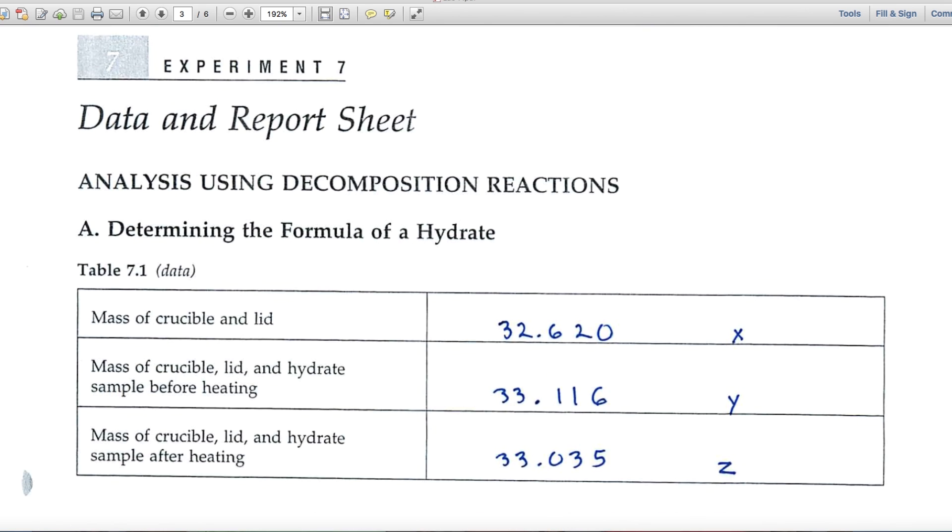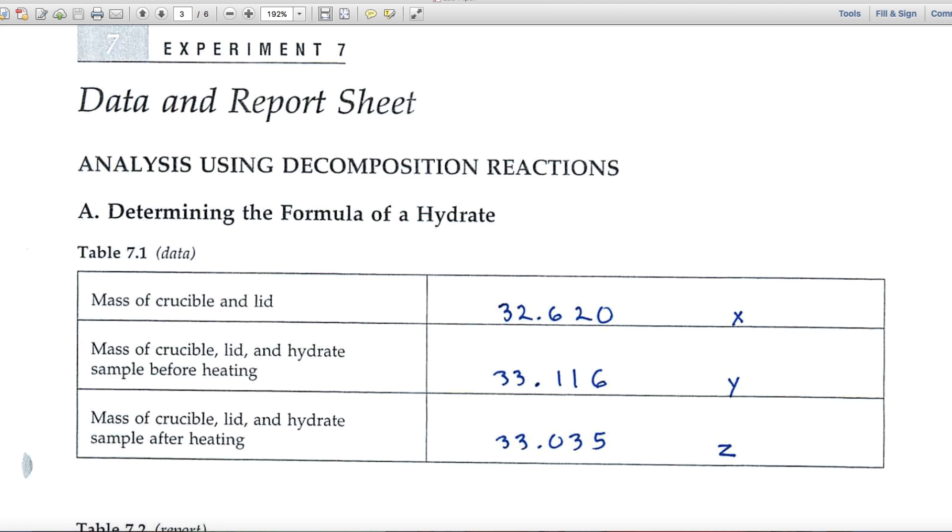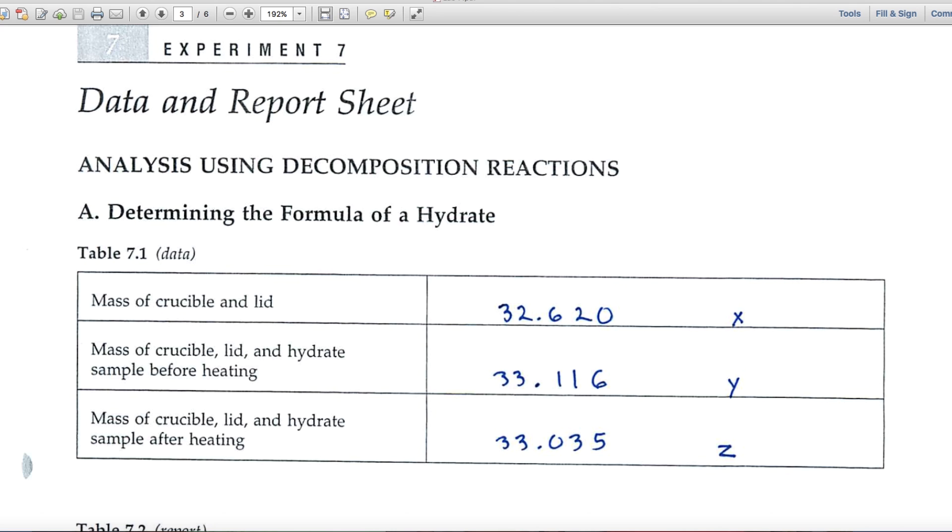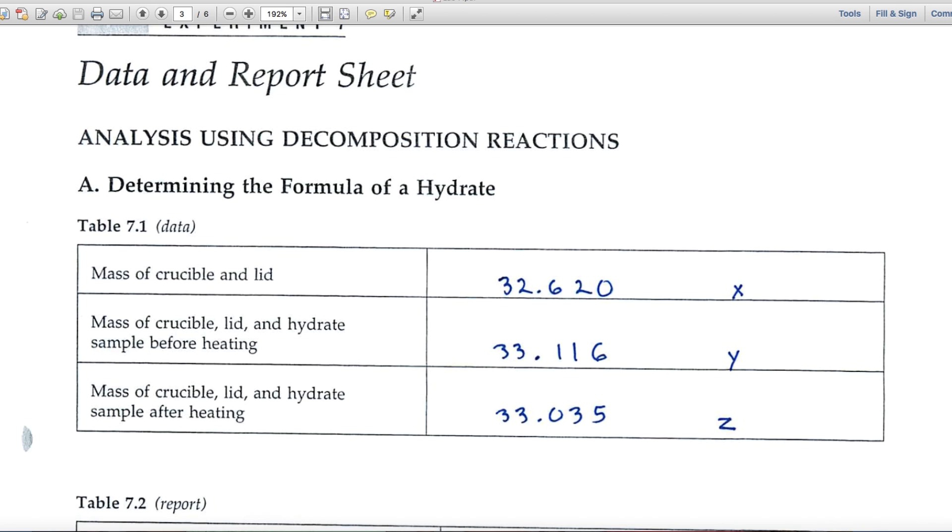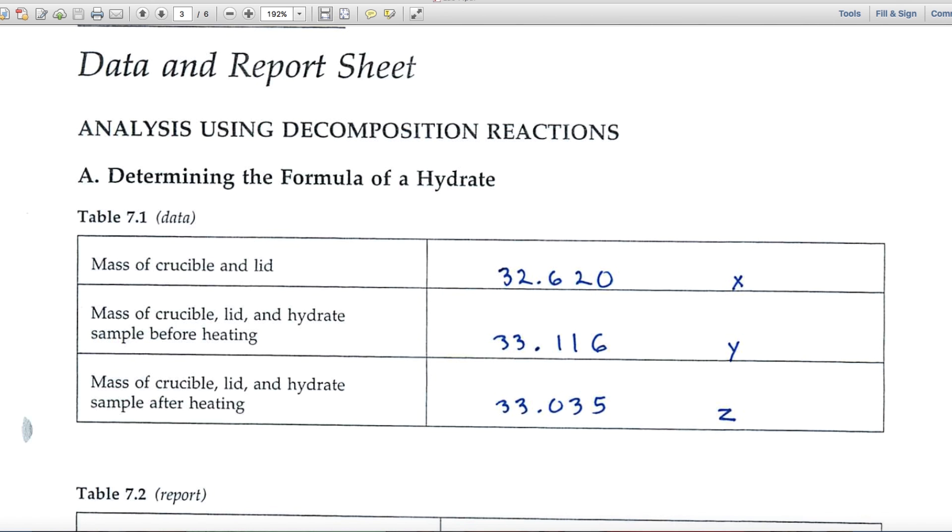Let's look at the data and report pages. A decomposition reaction is where you take a material and it breaks apart and gives two substances, B plus C. In this case, Part A, we're determining the formula of a hydrate. A hydrate is a combination of a chemical substance with water, and we're going to determine how much water is bound to that chemical substance.